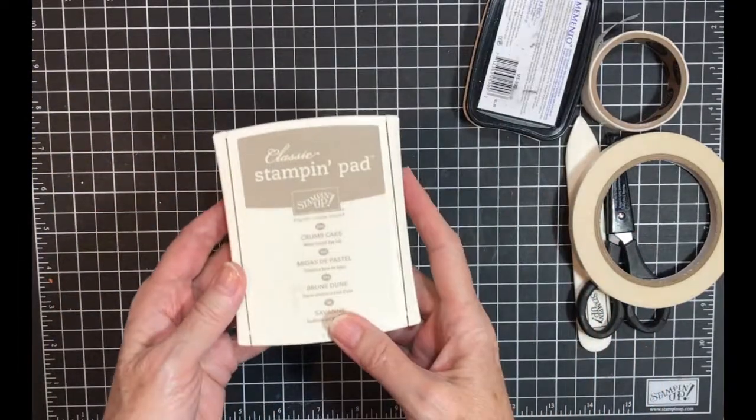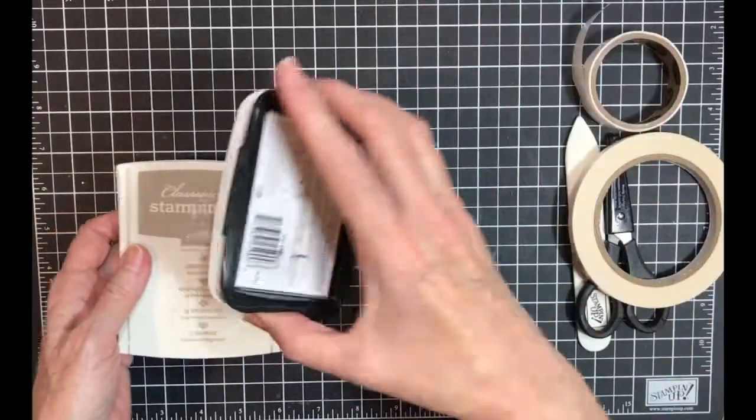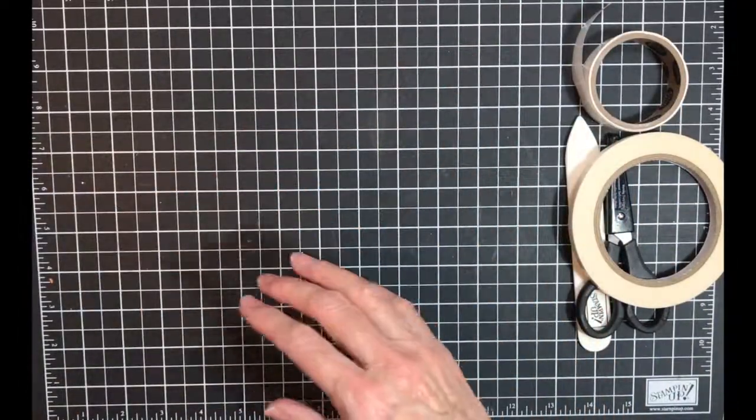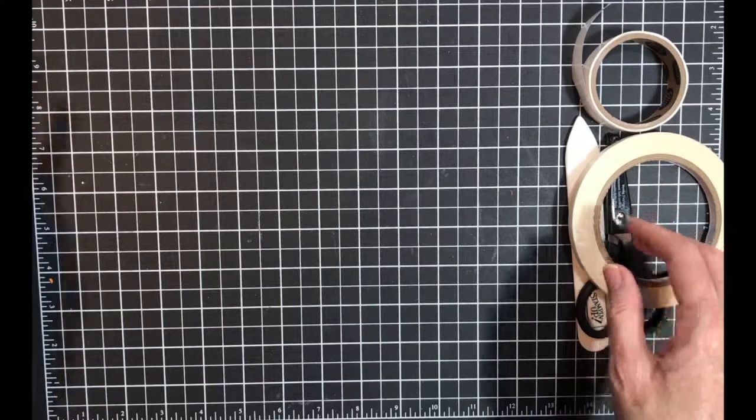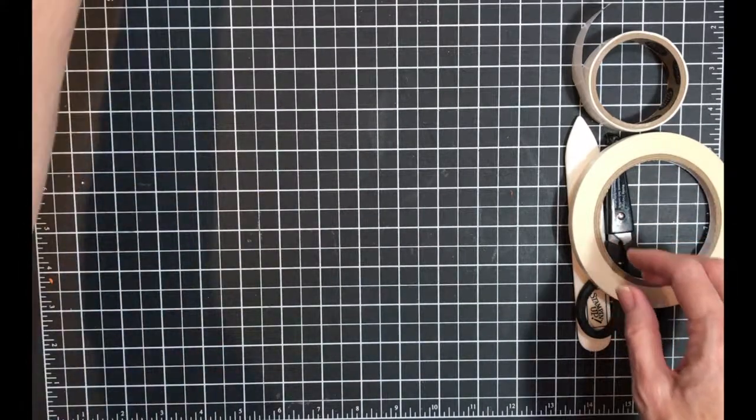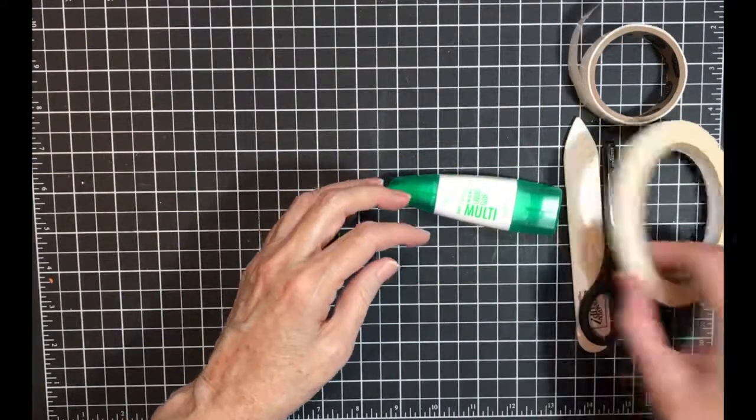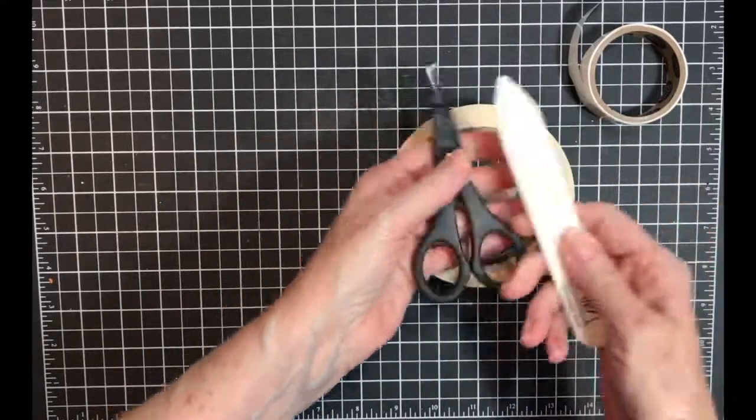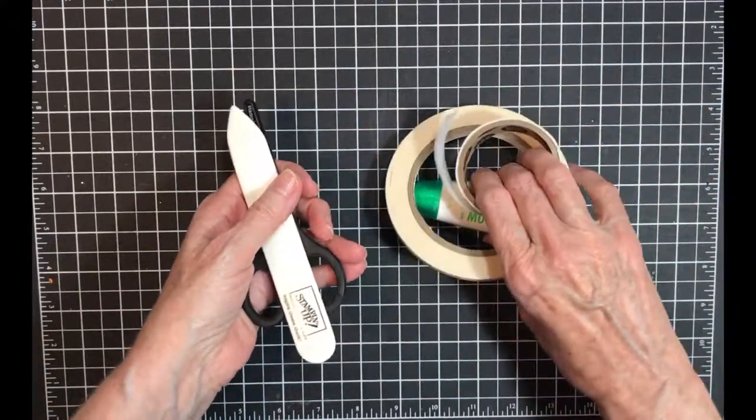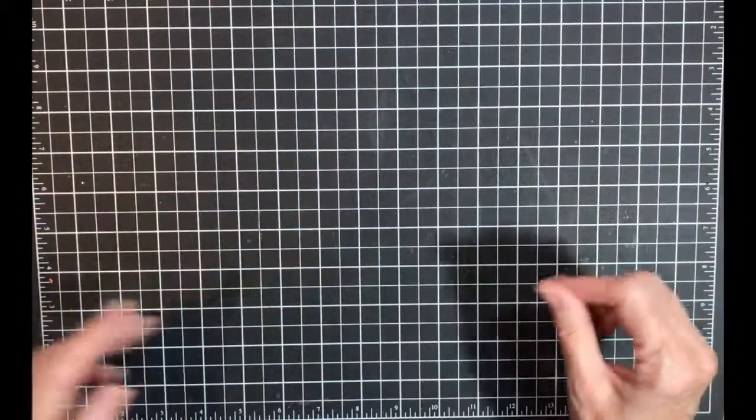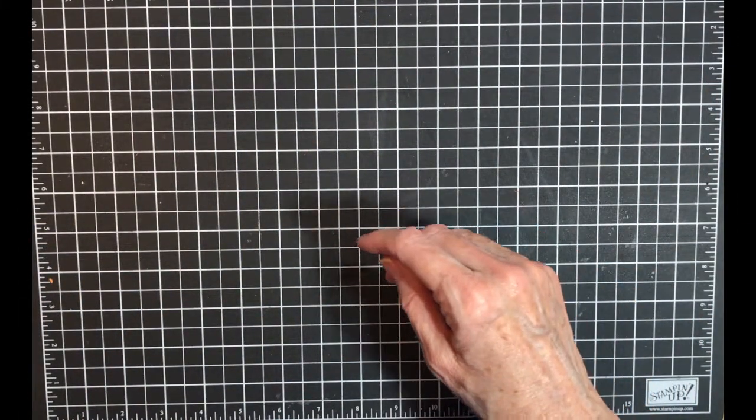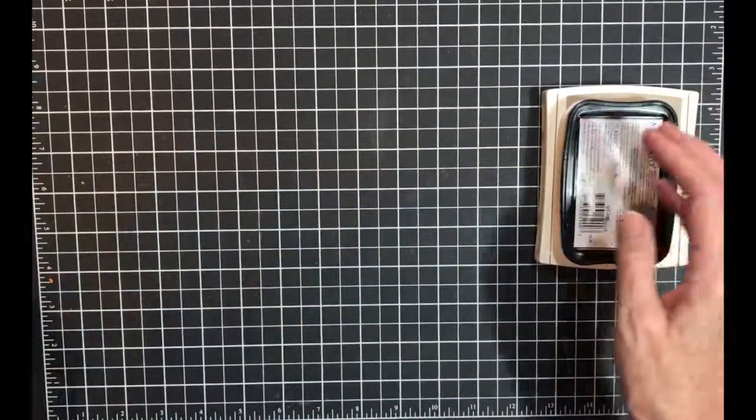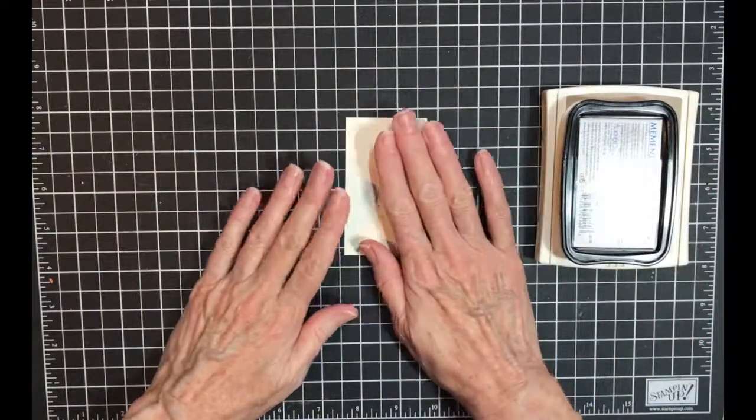I have the Crumb Cake pad, the Memento pad, and then I have my usual supplies. Not knowing what I'm going to use, I have my multi-purpose glue, my tear and tape, my scissors, my bone folder, and my glue dots if I need them.